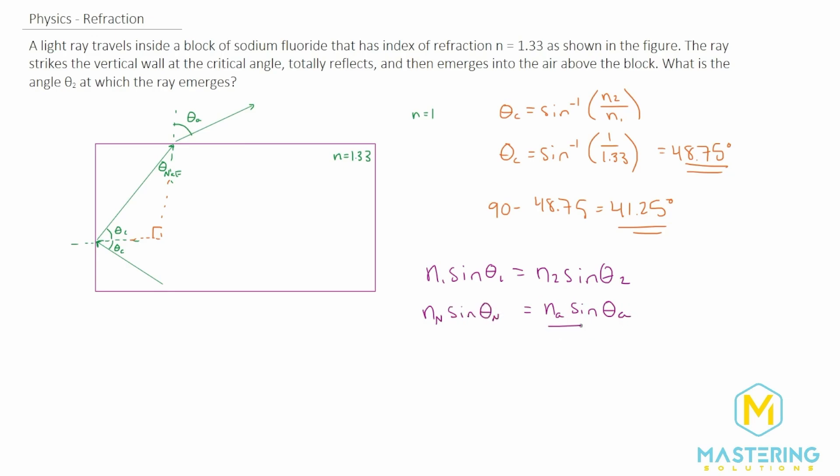So if we divide both sides by the index of refraction of air, we'll take the inverse sine of both sides. Let's rewrite it over here for space. So we have N sub N sine theta N. All that's divided by the N of the air. And then we take the inverse sine of all this. And then that's equal to the theta sub A.